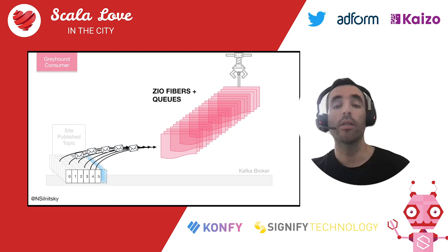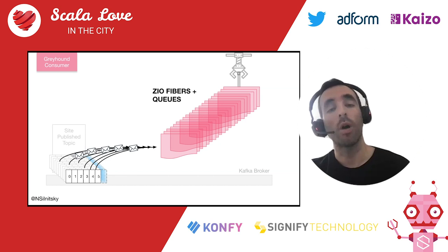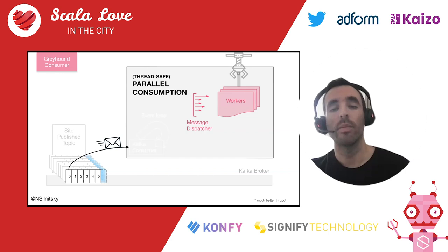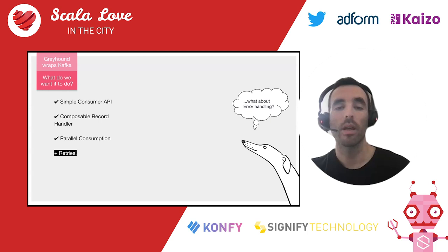We noticed a great deal of improvement in throughput at Wix services when we switched from the old multi-threaded environment of the old Greyhound to the new fiber-based Greyhound. Each worker runs the logic on its own fiber.